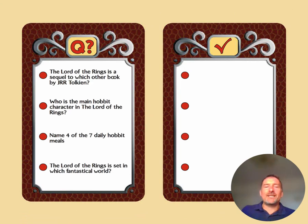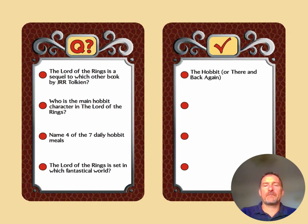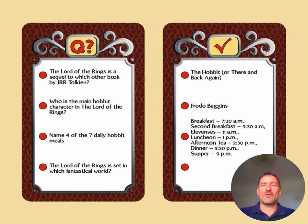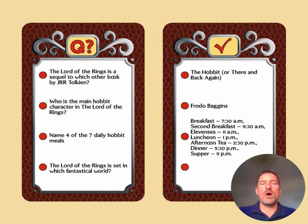The Lord of the Rings is a sequel to which other book by J.R.R. Tolkien? The Hobbit, or There and Back Again. Who is the main Hobbit character in The Lord of the Rings? Frodo Baggins — it's Bilbo Baggins in The Hobbit. Name four of the seven Hobbit meals: breakfast, second breakfast, elevenses, luncheon, afternoon tea, dinner, and supper. And The Lord of the Rings is set in which fantastical world? Middle Earth.